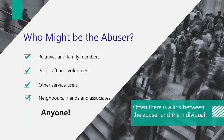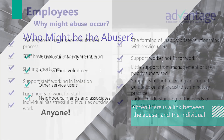When it comes to safeguarding adults, it is really important to think about who might be an abuser. The short answer is anyone — relatives and family members, paid staff, volunteers, other service users, neighbours, friends and associates.